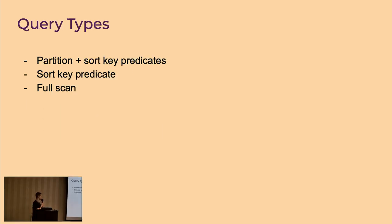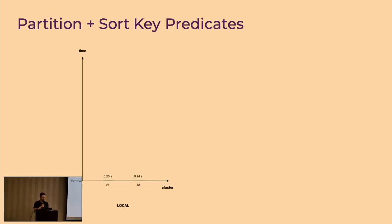I tested three query types: the first included a partition and sort key predicate (highly selective), the second included only a sort key predicate requiring scanning all metadata (but still very selective — only about 20 files matched out of 20 million), and the third was a full table scan. For the first query with partition and sort key predicate, there was no need for distributed planning because local planning completed in 0.25 seconds. This is important because it proves there's no need for a large cluster to work with gigantic tables if you're looking for a subset of the data, made possible because manifests are indexed so we can skip irrelevant metadata.